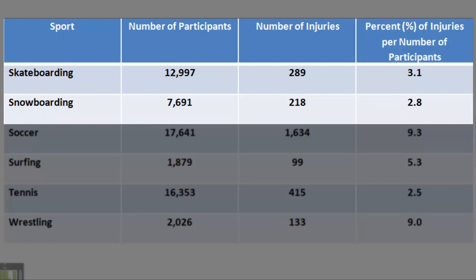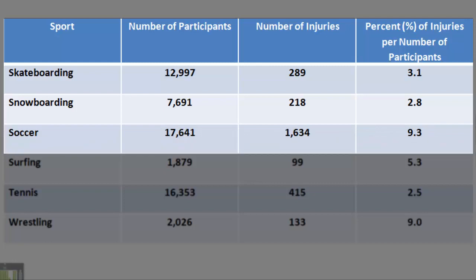Snowboarding. Number of participants: 7,691. Number of injuries: 218. Percent of injuries per number of participants: 2.8. Soccer. Number of participants: 17,641. Number of injuries: 1,634. Percent of injuries per number of participants: 9.3.